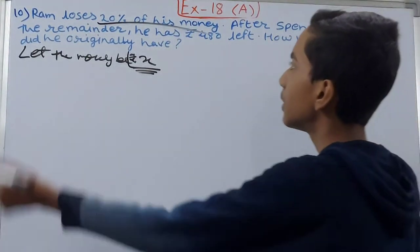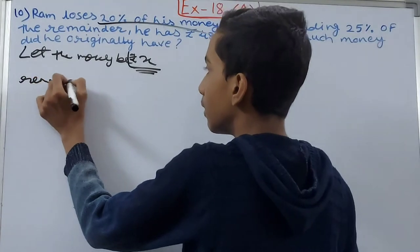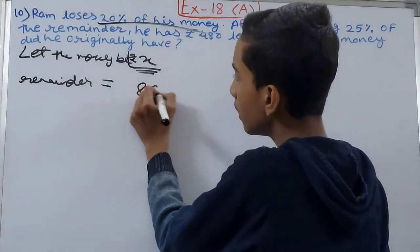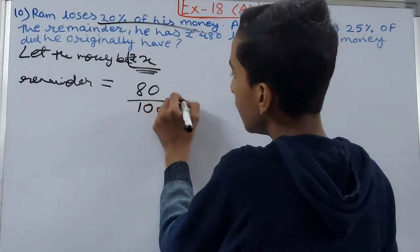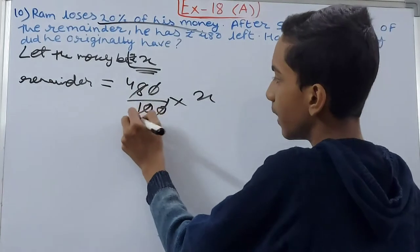The remainder - he had 80 percent after losing 20 percent. So 80 upon 100 times x. Cancel this zero, cancel this zero, 1, 4, and 5.